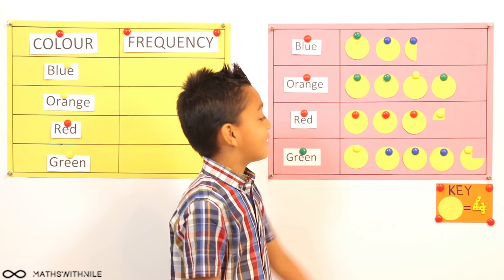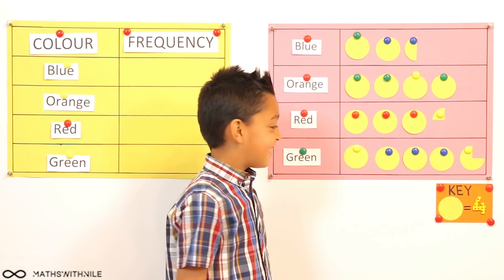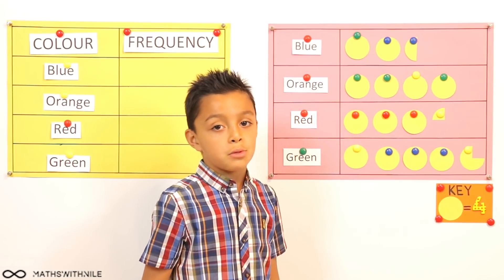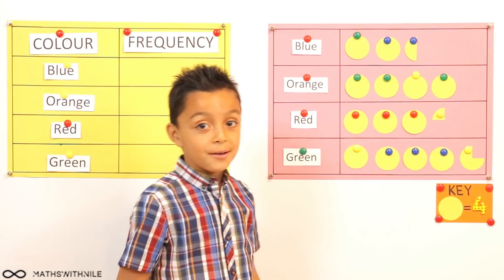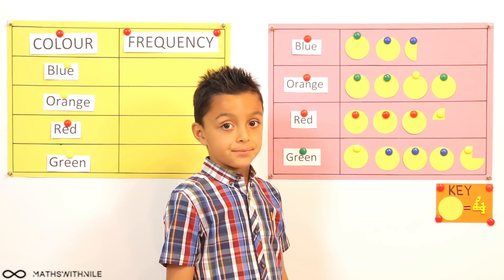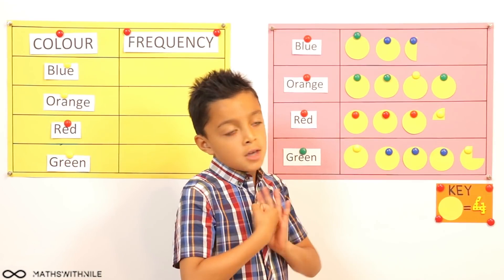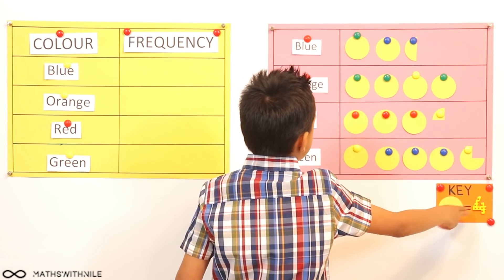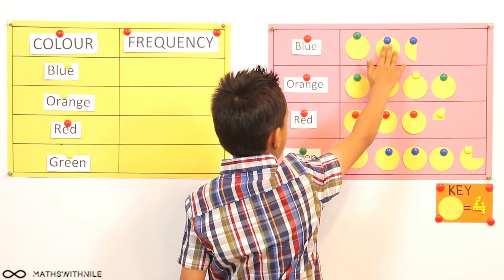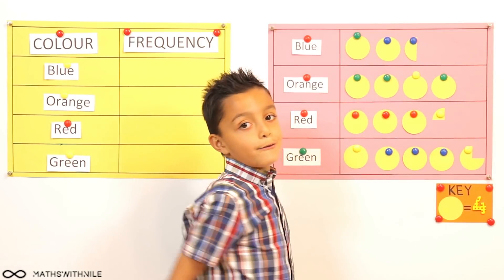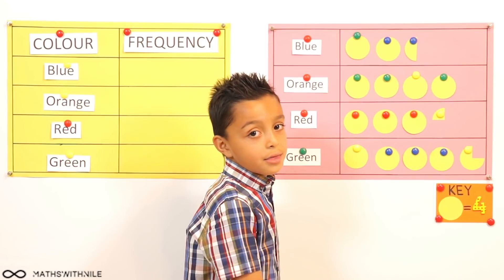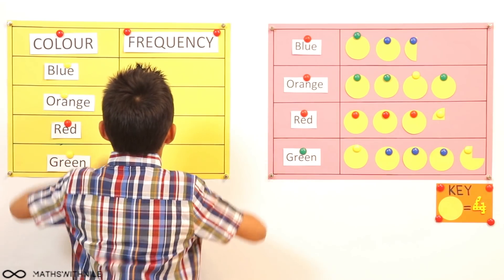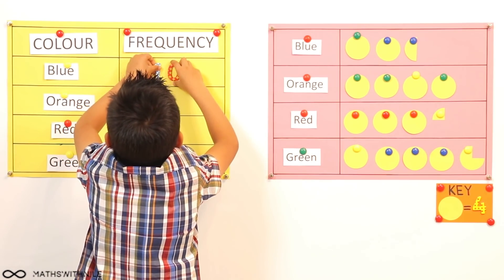How are you going to start off? I'm going to look at the key. Very good. Always start with the key. What does the key say? One circle equals four, not two. So it's not equal to two anymore, it's equal to four. Yes. So can you start working out from the first color? So two times four equals eight. And then half of four is two. So eight plus two equals ten. Ten blue sweets.